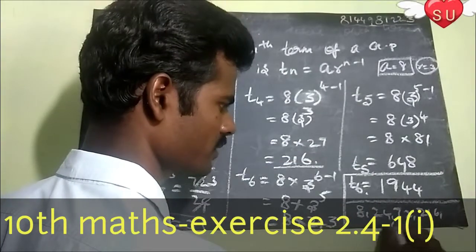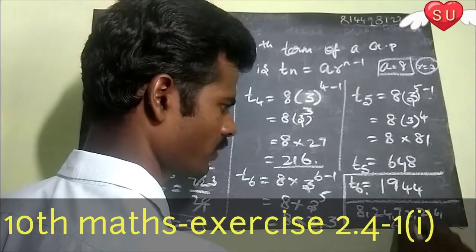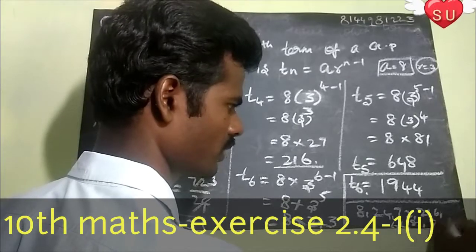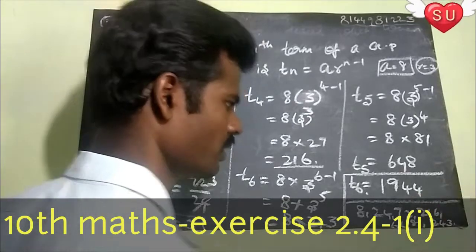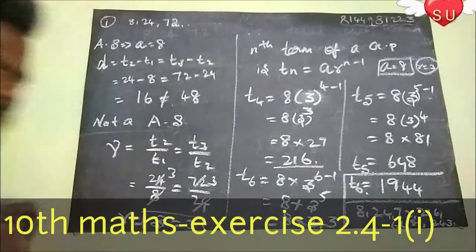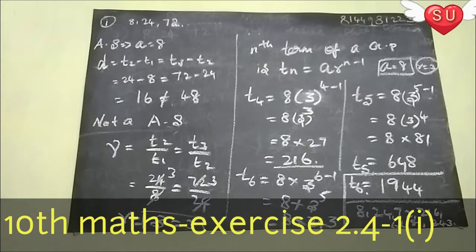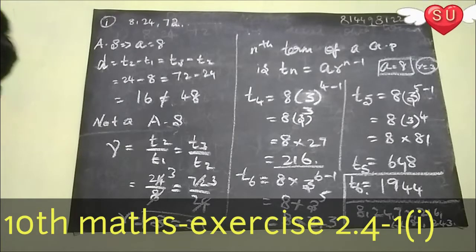So the next three terms are 216, 648, and 1944. This is the first sum. I will see you in the next video. Thank you.